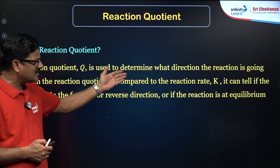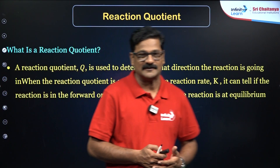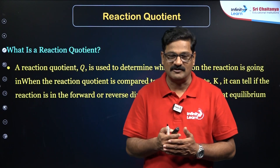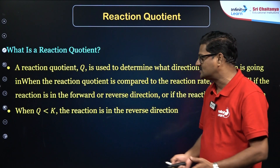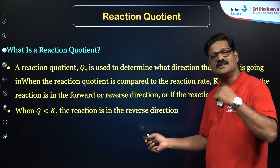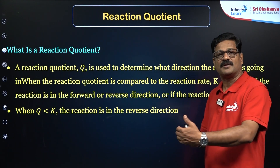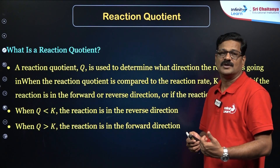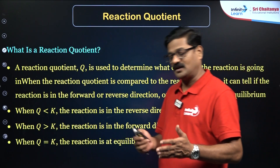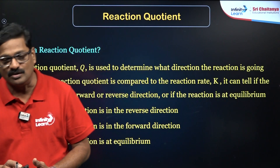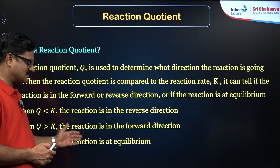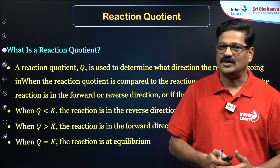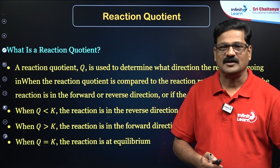Reaction quotient is used to determine the direction of the reaction — whether it is proceeding in the forward direction, backward direction, or is at equilibrium. The conditions are: if K is greater than Q, the reaction proceeds forward; if K is less than Q, the reaction comes in the backward direction; and if K is equal to Q, the system is at equilibrium.